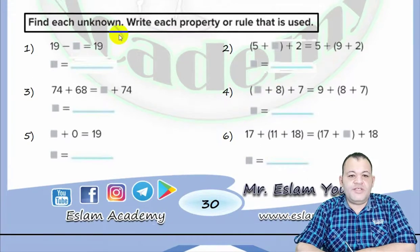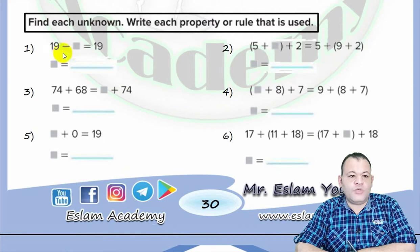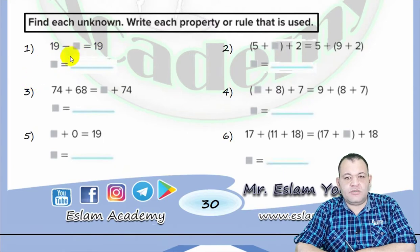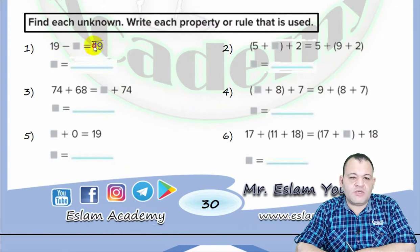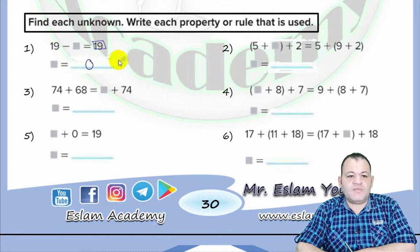Now let's find each unknown and write the property used. Question number 1: 19 minus a number equals 19. If you subtract zero from a number, the answer will be the same. This means the unknown would be zero, and this property is defined by the subtraction rule.